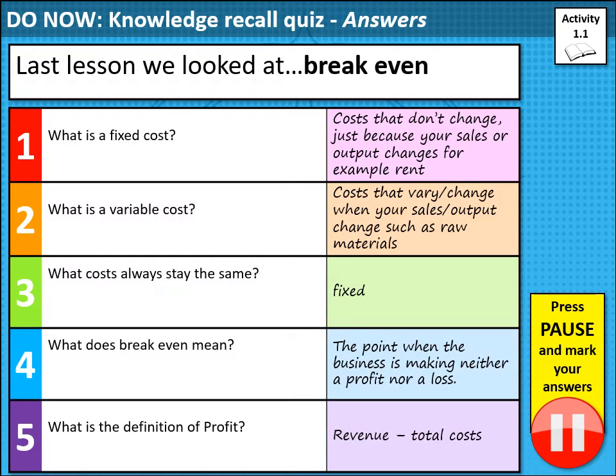So these are the answers for the break-even recall knowledge quiz. What is a fixed cost? It's costs that don't change just because your sales or output changes — for example, rent and machinery. What is a variable cost? Costs that vary or change when your sales or output change, such as raw materials. For example, if you're going to make lots of orders for new t-shirts, you're going to need lots of cotton material.